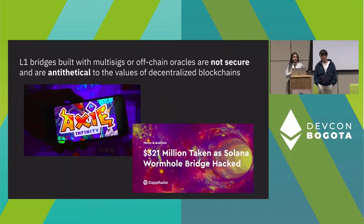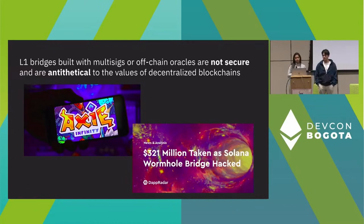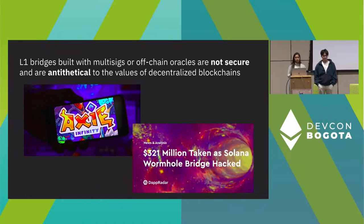Bridges are really important. So let's talk about what bridges look like today. Most L1 bridges are built with multi-sigs or off-chain oracles. The high-level design is you have a multi-sig run by a centralized entity that watches for deposits on one chain, and then signs off on withdrawals on another chain. These multi-sig designs are generally pretty bad for a lot of reasons: they're censorable, not permissionless, very centralized, and empirically have been very insecure — there have been many bridge hacks. These bridge hacks are not only bad for users who've lost billions of dollars, but they're broadly bad for the entire space, reducing credibility and leading to severe downstream consequences like regulation.